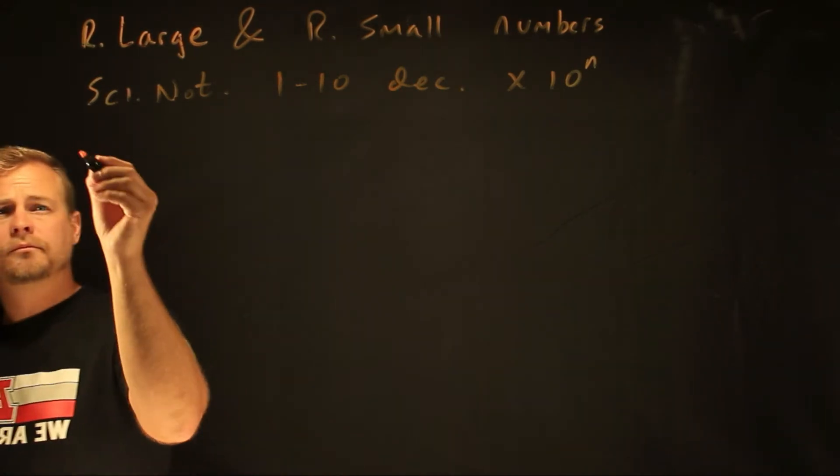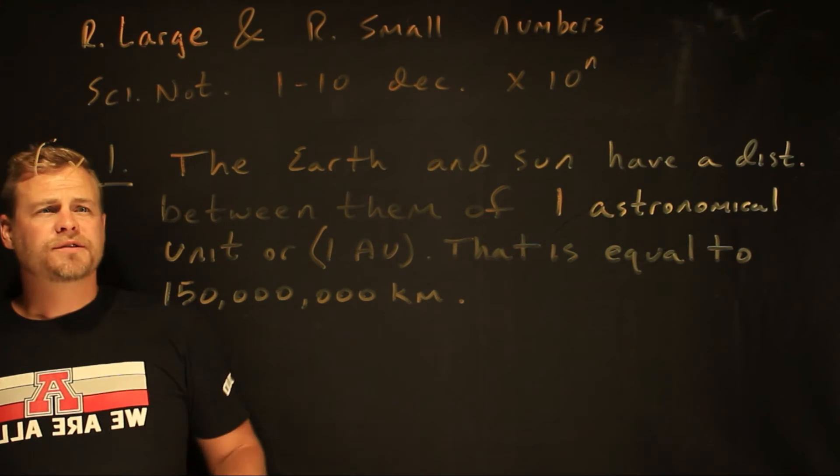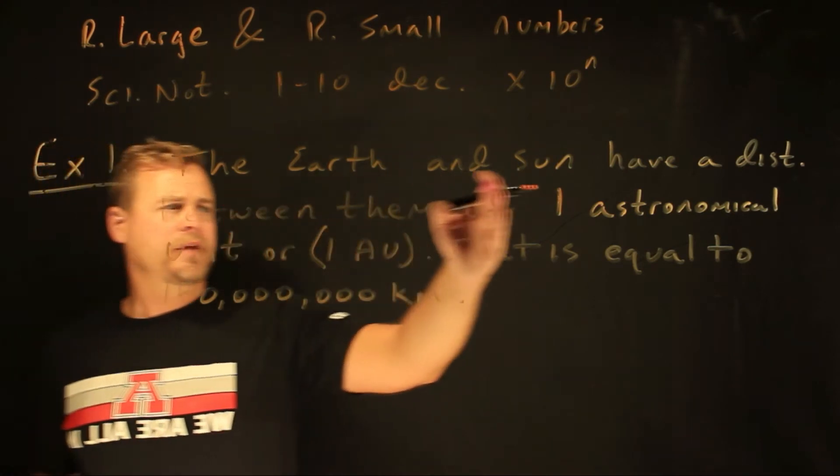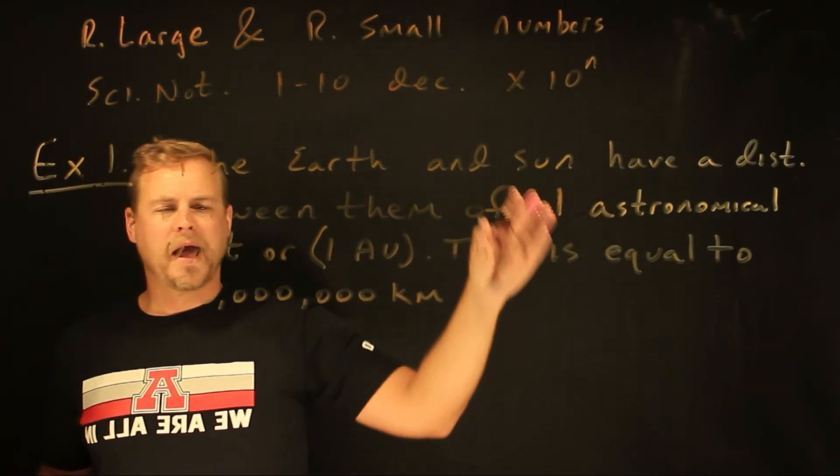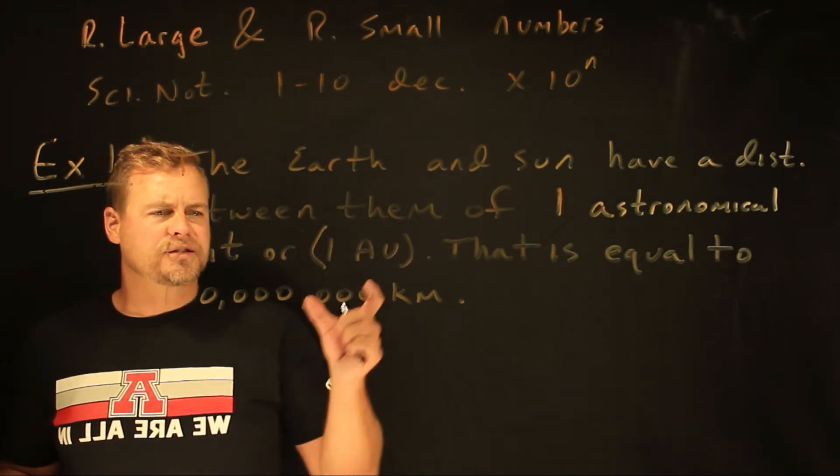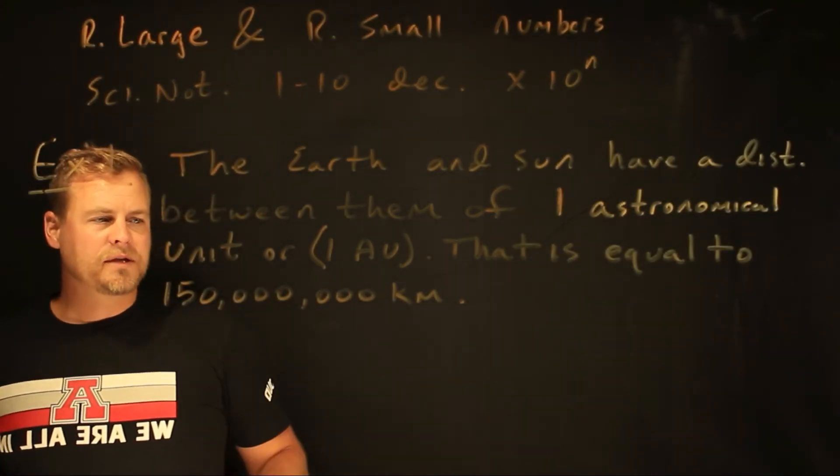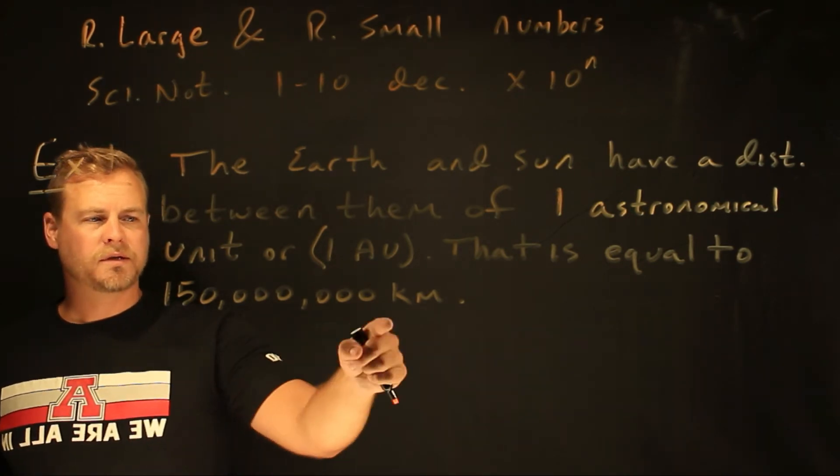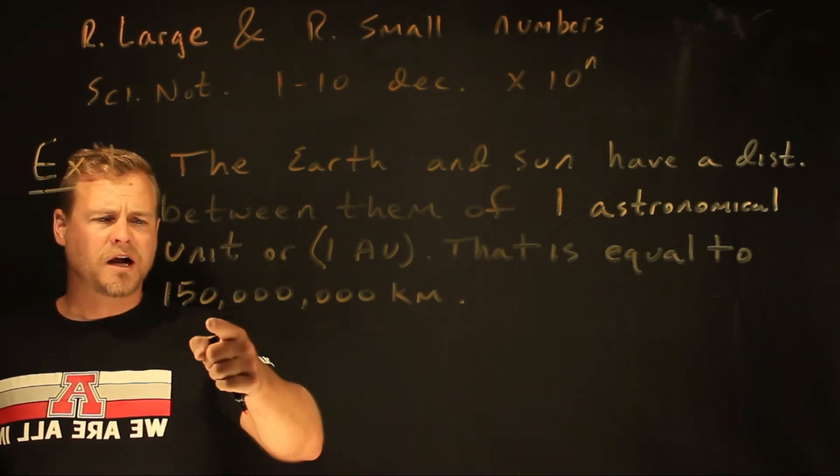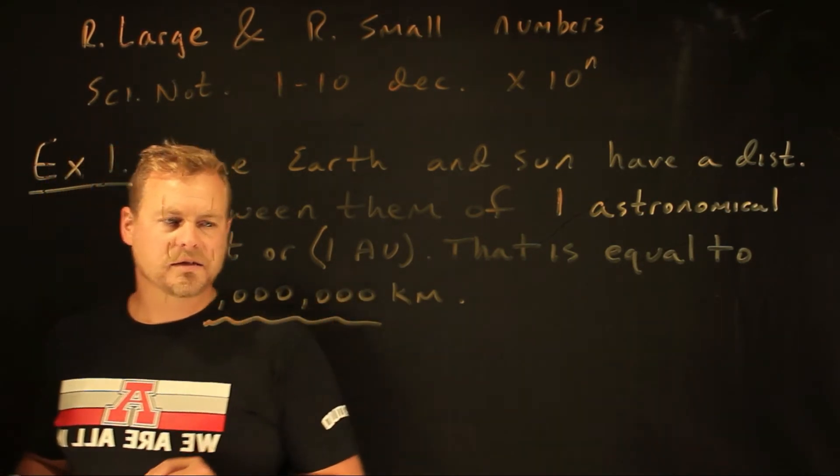So let's do an example. Dealing with a really large number, the distance between planetary objects. The Earth and the Sun have a distance between them of one astronomical unit. It's called one AU. You'll see that every now and then. It's a standard unit for astronomy. That's equal to about 150 million kilometers. And that's a really big number. And if you were dealing with a whole bunch of astrophysics and math out there with large numbers, you're not going to want to carry around all of these zeros. It's going to be a pain in the butt. And so what I want to do is change this into scientific notation.